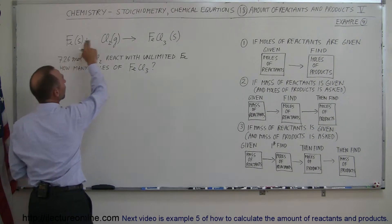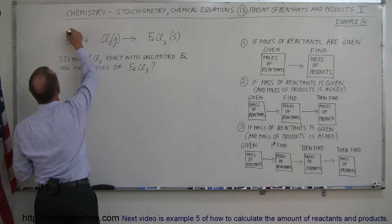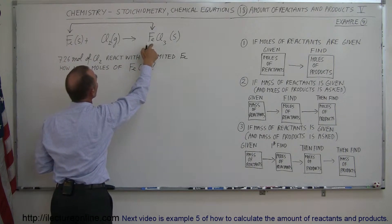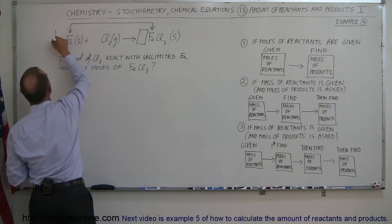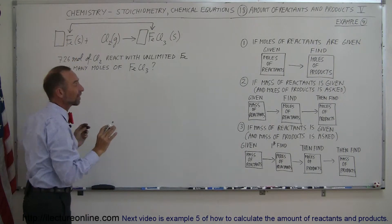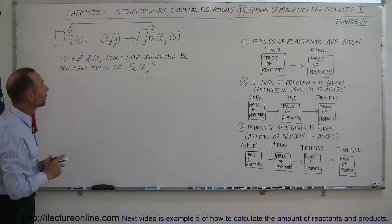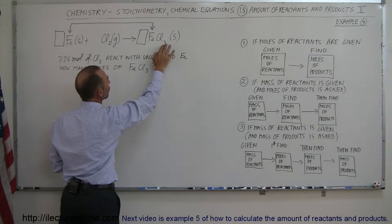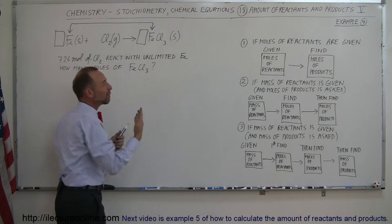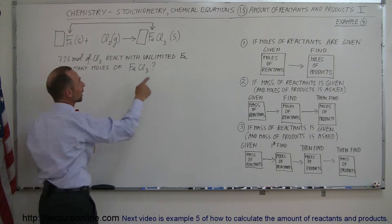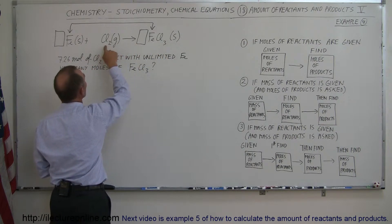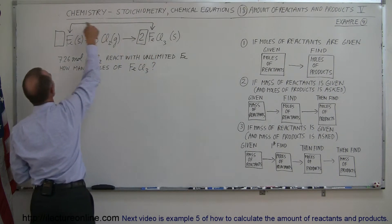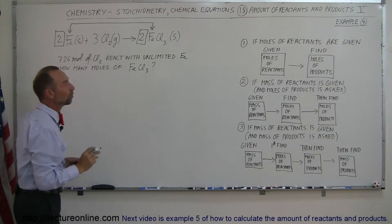We have iron on the left side and iron on the right side. Since there's only one atom per mole on each side, whatever number goes in front of one must be the same as the other — so iron is balanced. For chlorine, we have the diatomic molecule Cl₂ (two atoms) on the left and three chlorine atoms in FeCl₃ on the right. To balance, we find the LCM: multiply Cl₂ by three to get six, and FeCl₃ by two to get six. So we place a 3 in front of Cl₂ and a 2 in front of FeCl₃, and since FeCl₃ has a 2, we also place a 2 in front of Fe. The equation is now balanced.